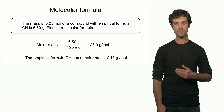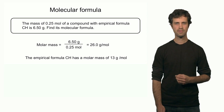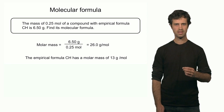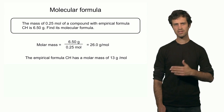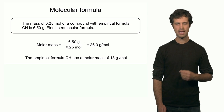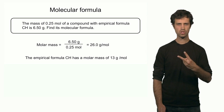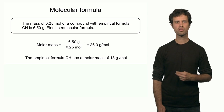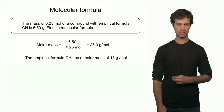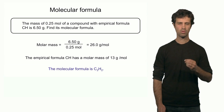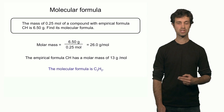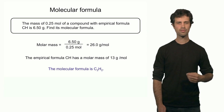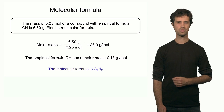The empirical formula, however — if you calculate the molar mass of that — you find 12 plus 1 equals 13 grams per mole. So the empirical mass is not the same as the actual molar mass of the compound. I need to multiply the empirical mass by 2, which means I need to multiply the empirical formula by 2 as well. That means the molecular formula is C2H2 — multiplying the empirical formula CH by 2. So the molecular formula is C2H2.